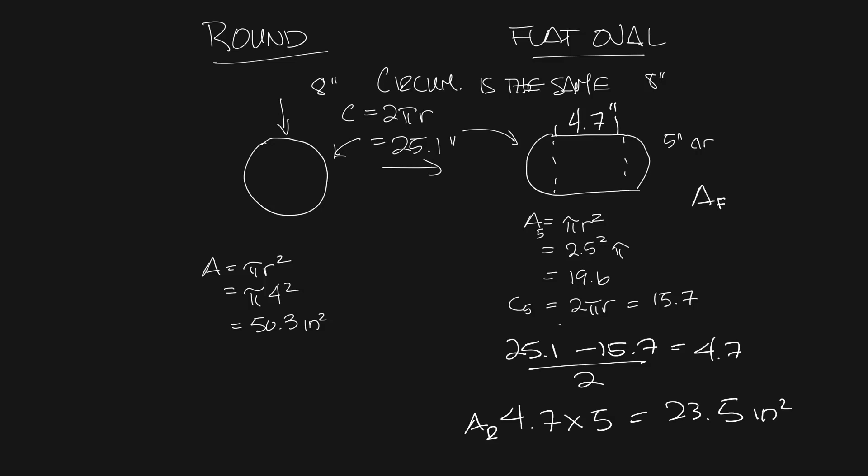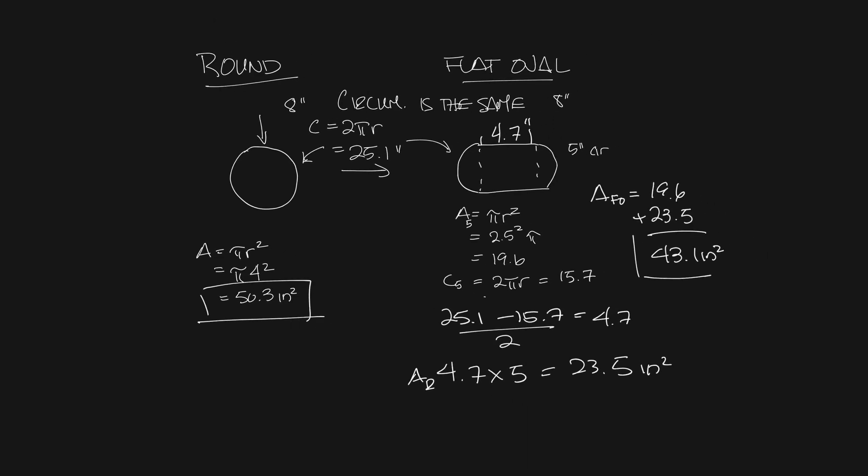So the area of the flat oval is 19.6 plus 23.5 is 43.1 square inches. Compare that to the 50.3 square inches of the 8 inch round.